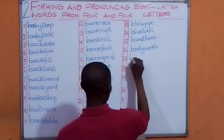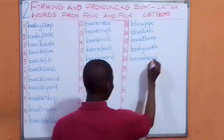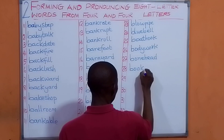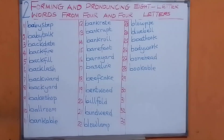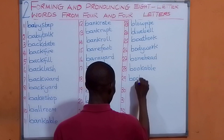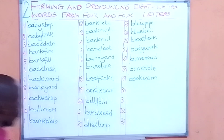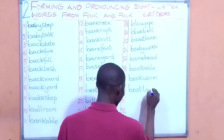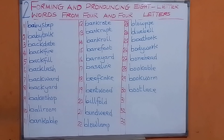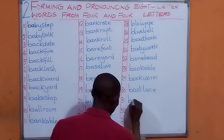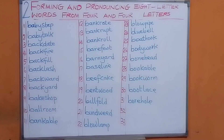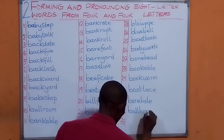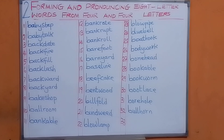Let's have bone and head. We are going to have bonehead. Let's have book and elbow. We have bookelbow. Let's have boot and lace. We are going to have bootlace. Let's have ball and hole. We are going to have bowlhole. Let us have bull and horn. We are going to have bullhorn.